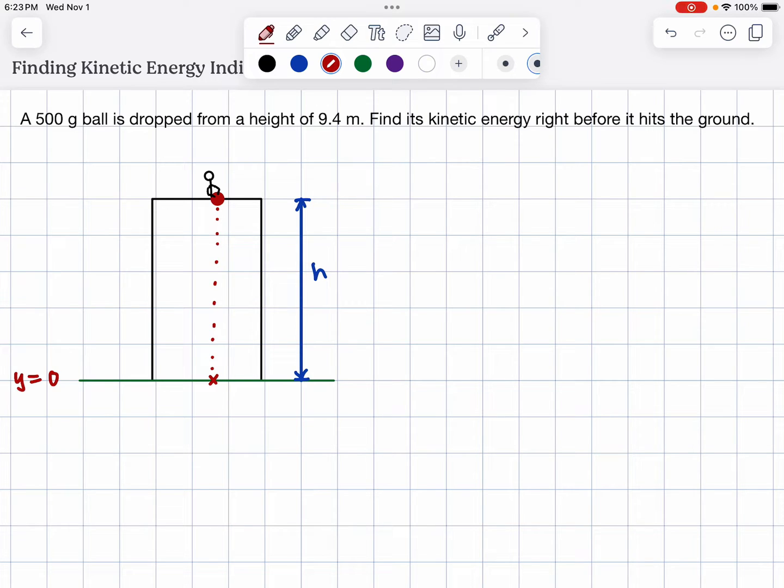To find its kinetic energy, I have to think about what is the energy of the ball right before it is released. Because we are at a certain height and the ball is not moving, the only energy we have is potential. If we start with the conservation of mechanical energy, we would have kinetic energy initial plus gravitational potential energy initial. There's no elastic, so I don't have to include it. This is equal to kinetic energy final plus gravitational potential energy final.